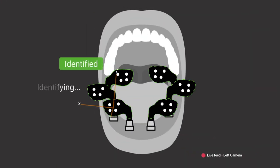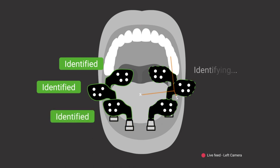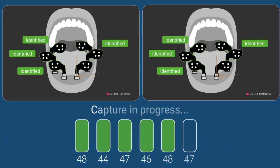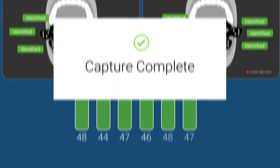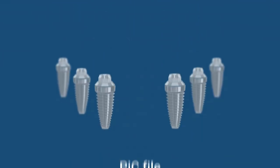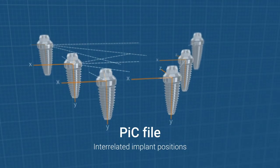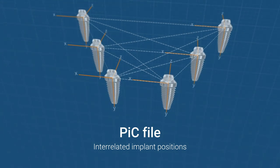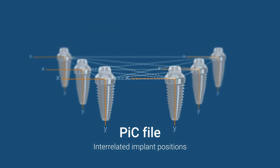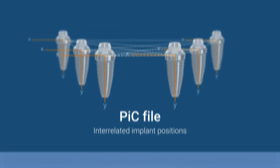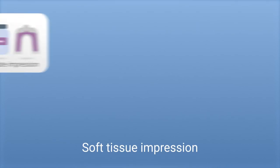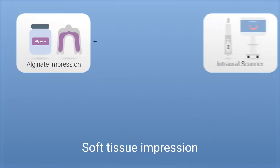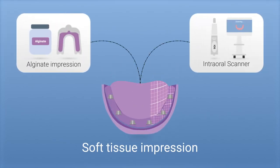The PIC camera is approached to the oral cavity and the capture begins automatically. Instantly, the PIC abutment positions are identified and their relative distances and angles are measured. A notification appears in real time when all the necessary data has been acquired. The results are immediately exported to a PIC file that contains the exact positions, angles, and interrelated distances between the implant platforms.